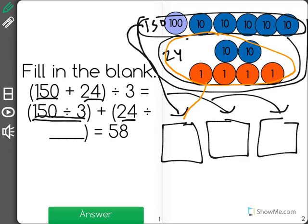It will still be divided into three groups just like the 150 was because it was starting with all of them. So for 24 divided by blank, we are dividing it into three.